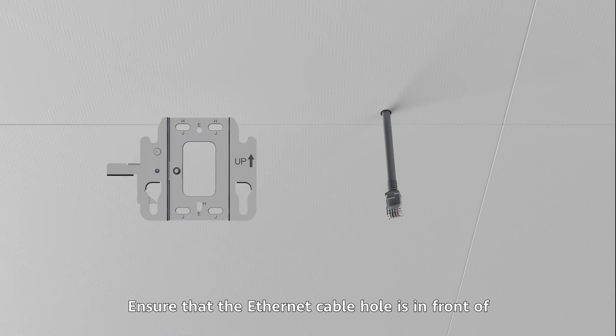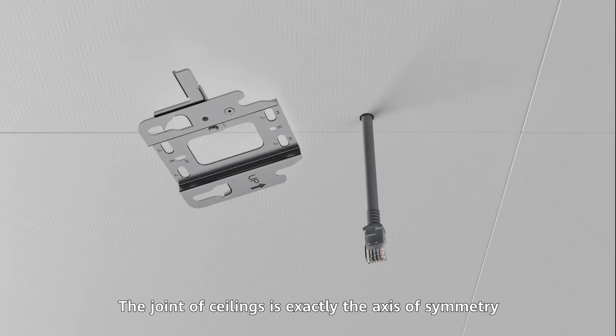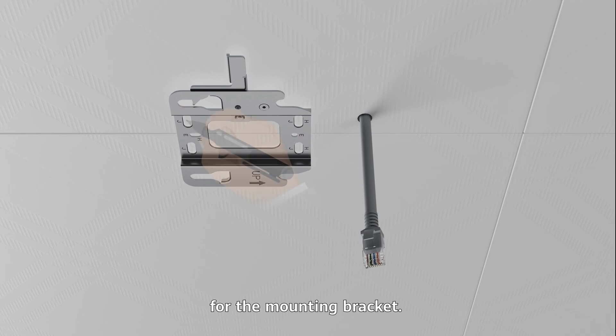Ensure that the ethernet cable hole is in front of the mounting bracket. The arrow on the mounting bracket points to the front end. The joint of ceilings is exactly the axis of symmetry for the mounting bracket.